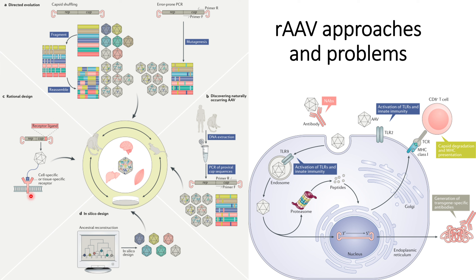The third approach is discovering naturally occurring AAV. In this case, people who are infected with AAV might have got some kind of mutation that does not trigger the immune reaction within the body. Samples of those patients will be extracted and DNA extraction from those samples will help identify what mutations do not trigger any immune reaction. Those mutated rAAV can then be used for their experiment or for final vaccine production.